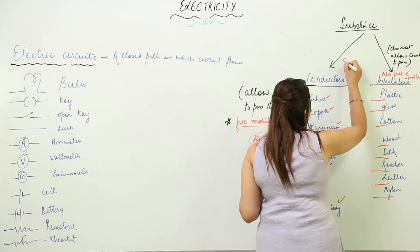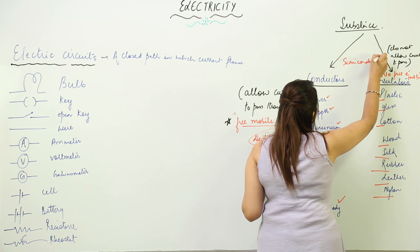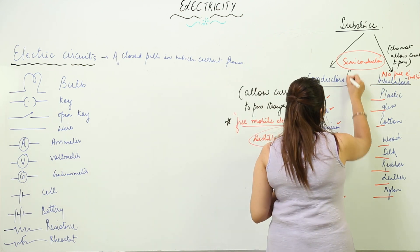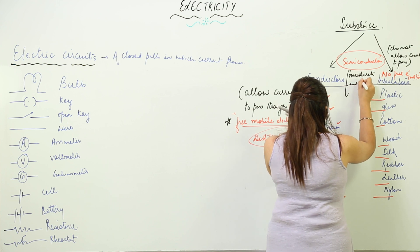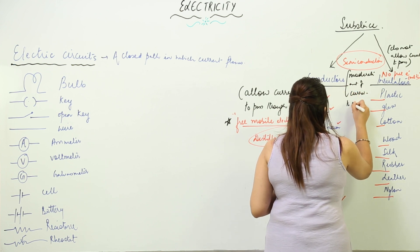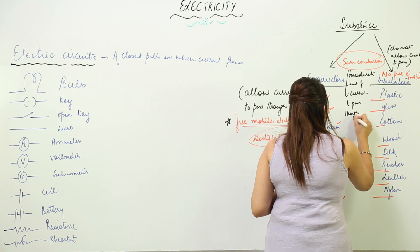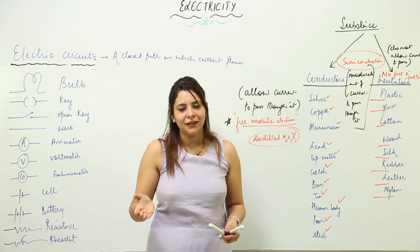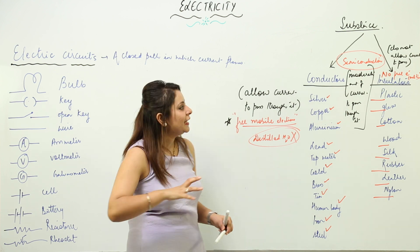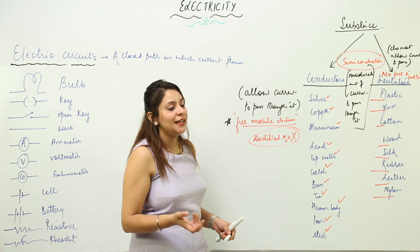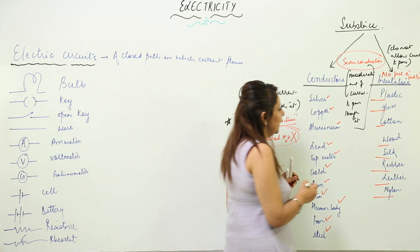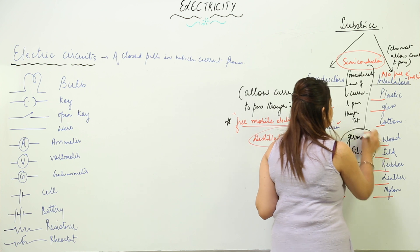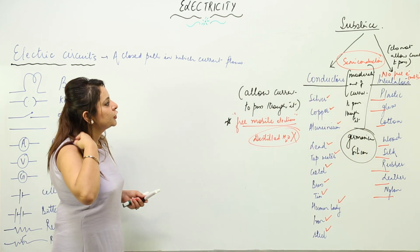There is a third category — semiconductors — which is not included in your syllabus, but I mentioned it when we were discussing solar cells. Semiconductors are those which allow a moderate amount of current to pass through them. They are not fully insulators and not fully conductors; they are intermediate. They allow less current than conductors but more than insulators. Examples are germanium and silicon, which are used in making solar cells.